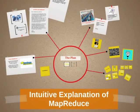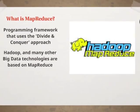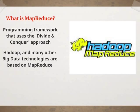Intuitive explanation of MapReduce. MapReduce is a programming framework that uses the divide-and-conquer approach to handle massive data sets and resource-intensive computational tasks. The Hadoop file system, as well as most of the popular big data technologies, are all based on the MapReduce framework. Let's try and intuitively understand how MapReduce works.